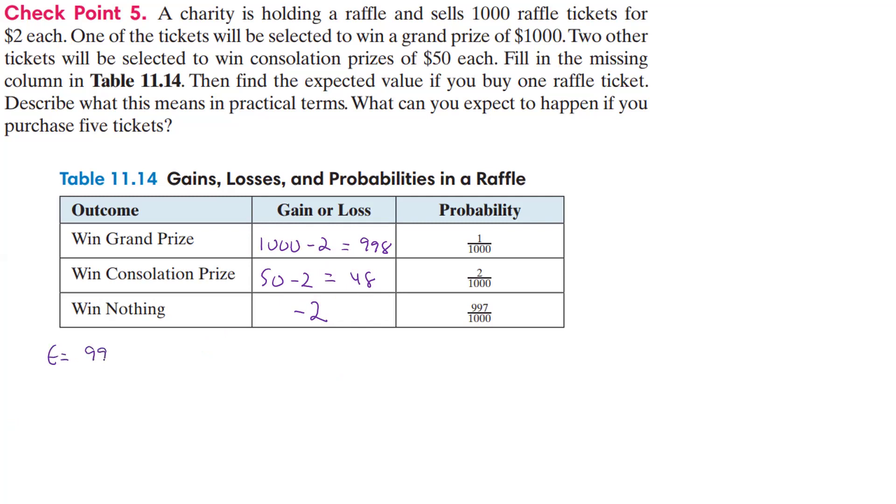Well, now we just take that 998 times 1 over 1,000, and then plus, and now we have 48 times 2 over 1,000, and then we have plus, and then we have a negative 2 times, and now there's 997 ways out of 1,000 to lose. And so what we're going to do is we're going to plug all that into our calculator, and we'll see what we get.